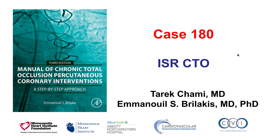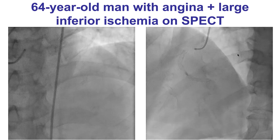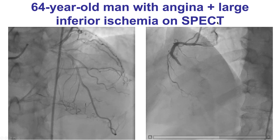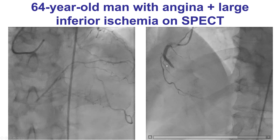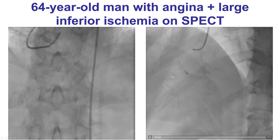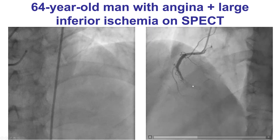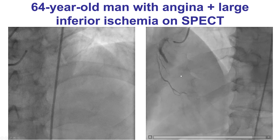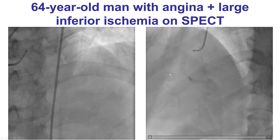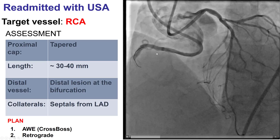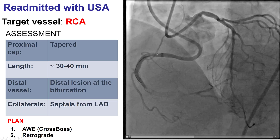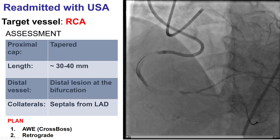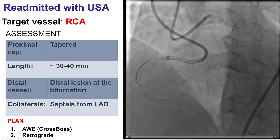This is a case of in-stent CTO PCI. The patient had previous PCI of the right coronary artery. He presented with angina and was found to have occlusion of the previously placed right coronary artery stents in the distal RCA. He had worsening chest discomfort and was referred for PCI of the right coronary artery. There was no significant disease on the left coronary system.